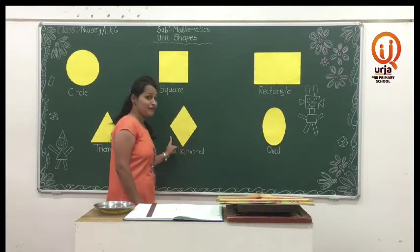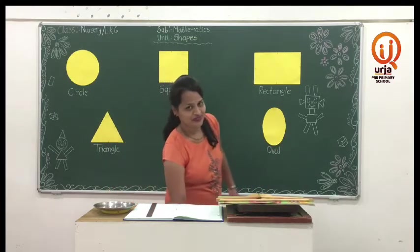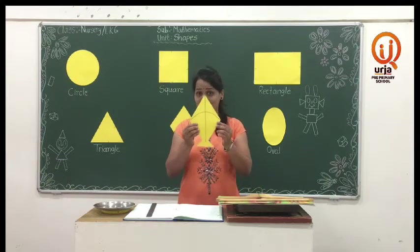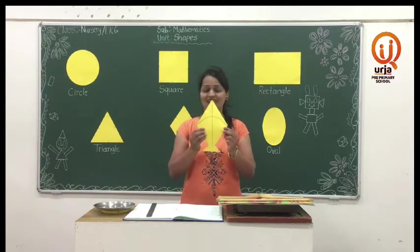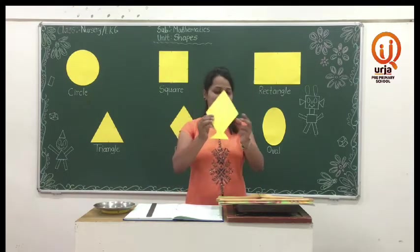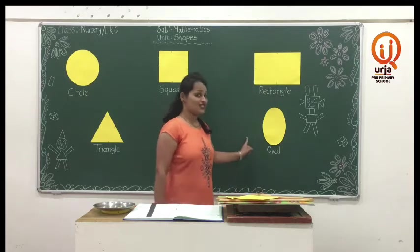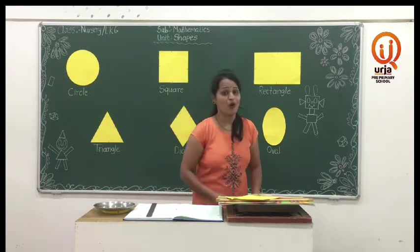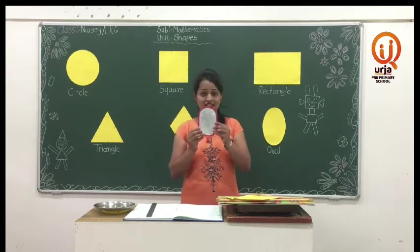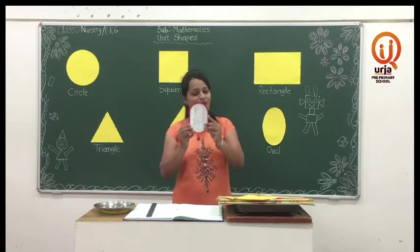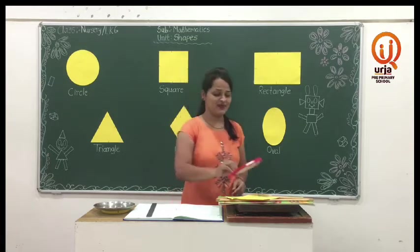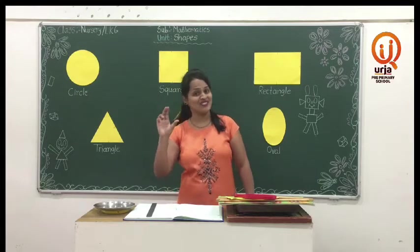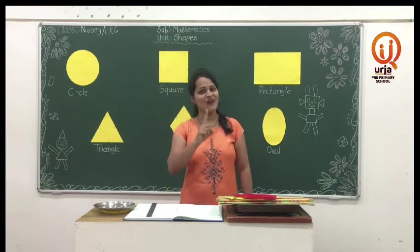Next shape, diamond. The shape of the kite looks like a diamond. And the last shape, oval. The shape of the needle looks like an oval. The shape of the egg looks like an oval.